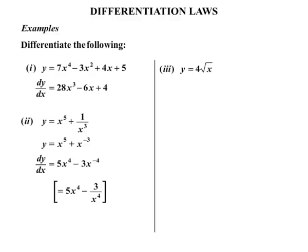Third example. y equals 4 times the square root of x. As before, we need to rewrite it because we need to write it in index form. So we've just rewritten the square root of x, can be rewritten as x to the power of a half.